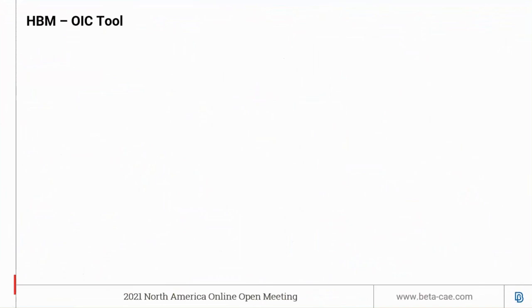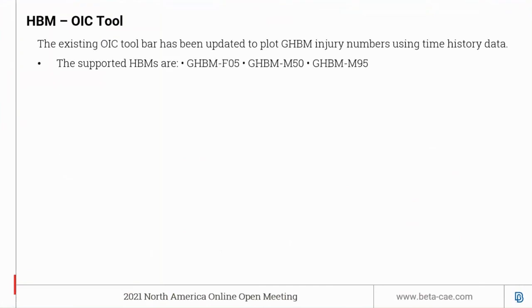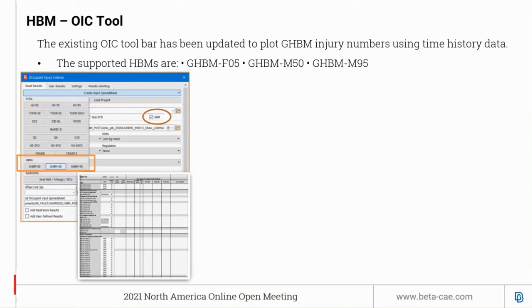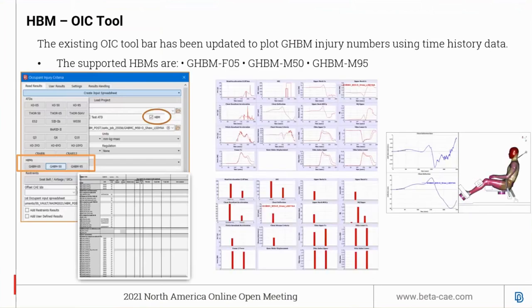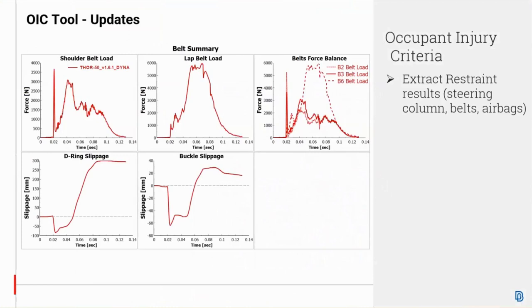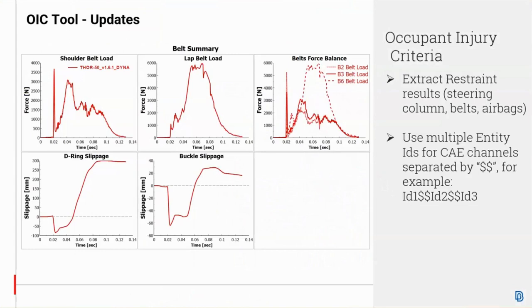The Global Human Body injury numbers can now be extracted using the OIC toolbar. The process remains the same where the user needs to fill in the Excel sheet with the required channel data and execute the command for the numbers. There is also a possibility to extract specific restrained results such as steering column, belts, and airbags for each processed occupant. It is also possible to use multiple entity IDs for channels separated by dollar signs. A new feature allows exporting all created curves in ASCII file format, with one file created for each curve.